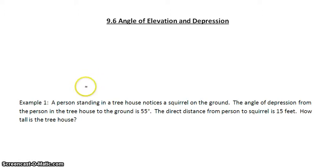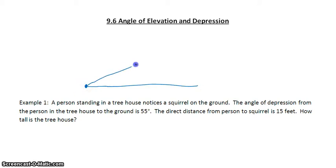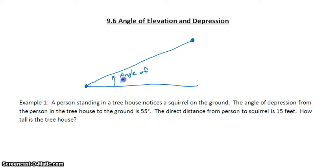The angle of elevation is created between the ground and the line of sight looking up to an object. That angle between the ground and the line of sight is called the angle of elevation.